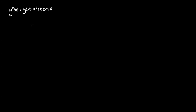Find the particular solution for the differential equation y''(x) + y(x) = 4x·cos(x). We start with the homogeneous portion where we set the left-hand side — y double prime plus y — equal to 0.